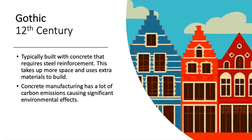Gothic architecture, 12th century. Typically built with concrete that requires steel reinforcement, taking up more space and using extra materials to build. Concrete manufacturing has a lot of carbon emissions, causing significant environmental effects. Even though this movement was widespread and well-known, it had its downfalls that weren't as apparent to people at the time, as it was something new and different.